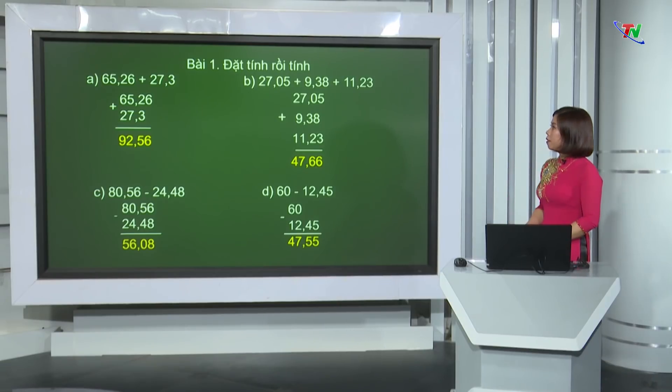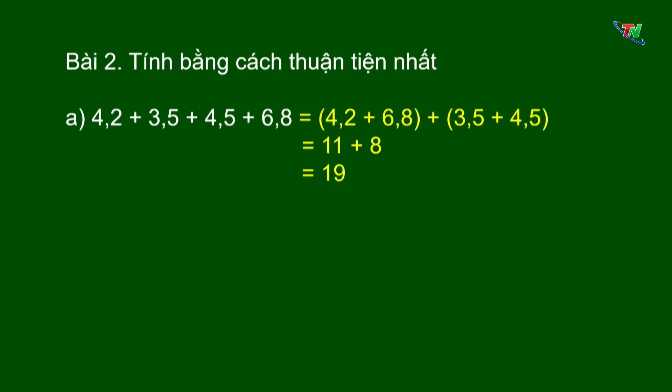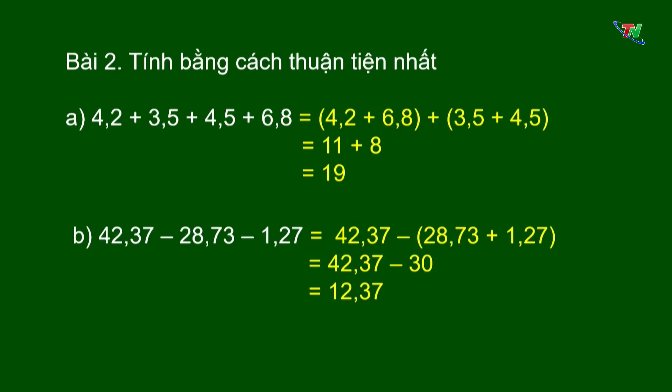Bài 2: Ở ý A, các em vận dụng tính chất giao hoán, tính chất kết hợp của phép cộng các số thập phân, kết quả bằng 19. Còn ở ý B, các em vận dụng một số trừ đi một tổng, ta được kết quả 12,37.